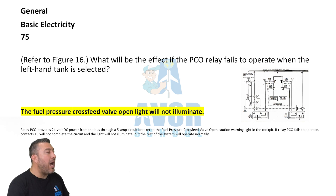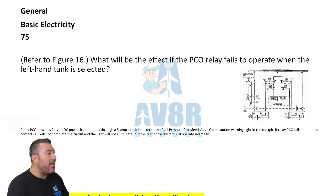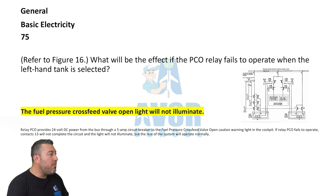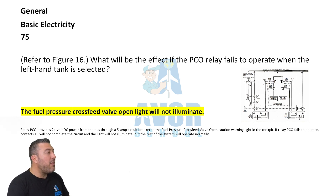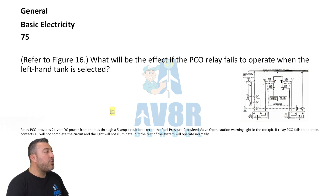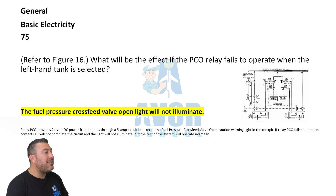Question 75, figure 16. What will be the effect if the PCO relay fails to operate when the left hand tank is selected? The fuel pressure cross-feed valve open light will not illuminate.